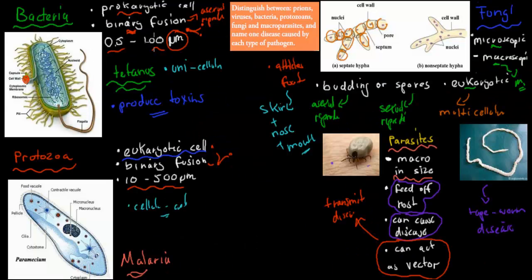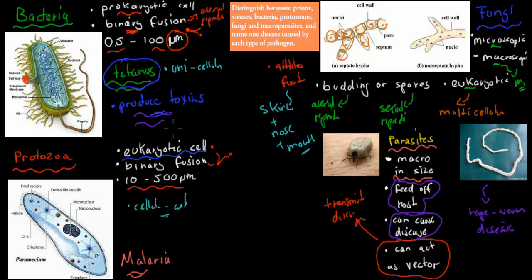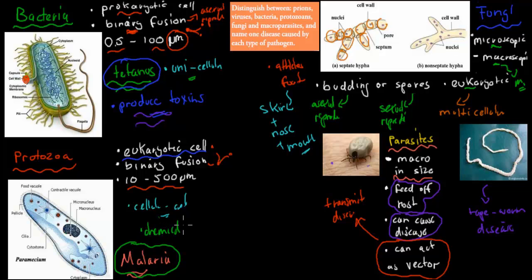Bacteria are prokaryotic cells — our first living things, unlike the non-living prions and viruses. They're relatively simple cells that reproduce by binary fission, which means asexual reproduction — they can just duplicate. Size-wise, 0.5 to 100 micrometers, so bigger than viruses. An example of disease is tetanus, which causes muscle spasms and neuron damage. The way they work is they produce chemicals that damage our body. They are unicellular in nature. Protozoa are bigger — about 10 to 500 micrometers — and also reproduce by binary fission. But they are eukaryotic cells, which means they're a bit more complex. An example of disease is malaria, caused by the plasmodium protozoan. They are also unicellular.